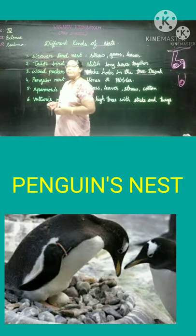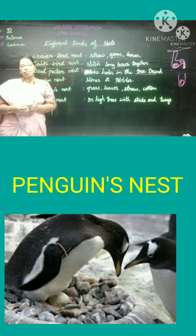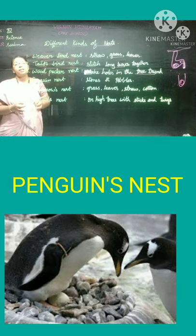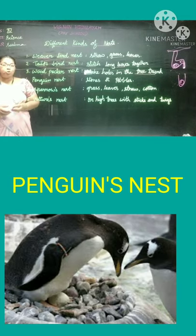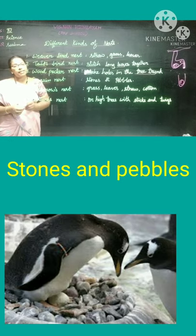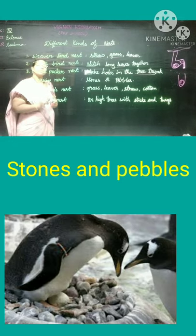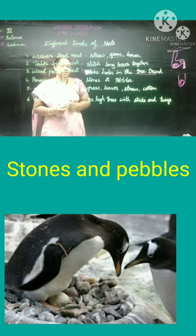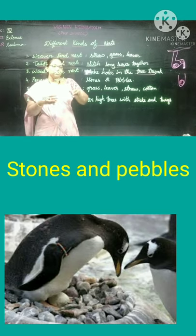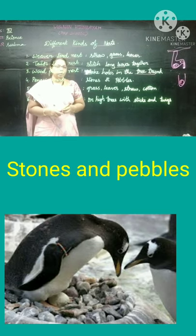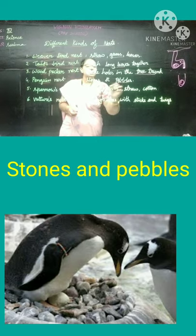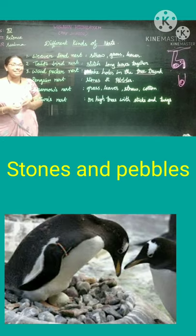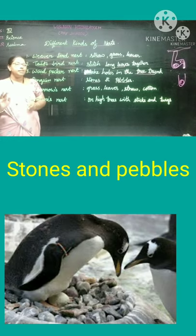Next, penguin. Penguins cannot fly. The penguin has to stay in cold, snow-covered areas. How does it make a nest? It collects stones and pebbles and arranges them in a small area so the snow will not be on the pebbles. On that area, it keeps its eggs and babies. Penguins make their nests only on the ground, not on trees.